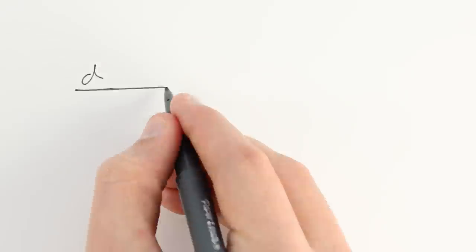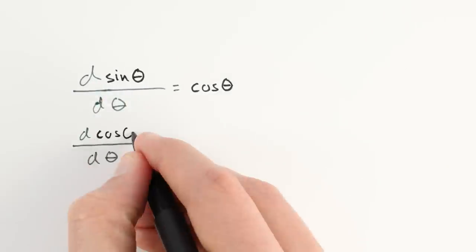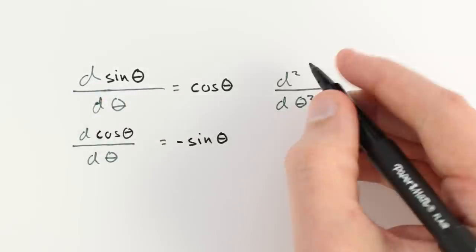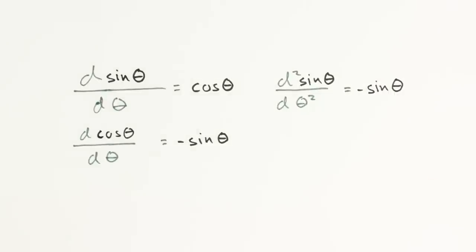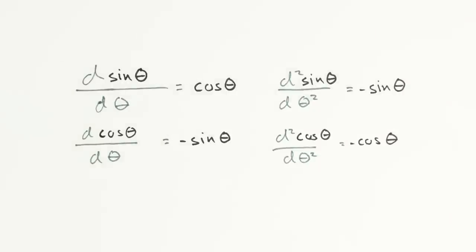In calculus, we learn that sine and cosine have some special properties when differentiated. The derivative, or slope, of a sine wave is a cosine. And the derivative of a cosine is negative sine. So if we differentiate sine or cosine twice, we get the minus version of what we started with.